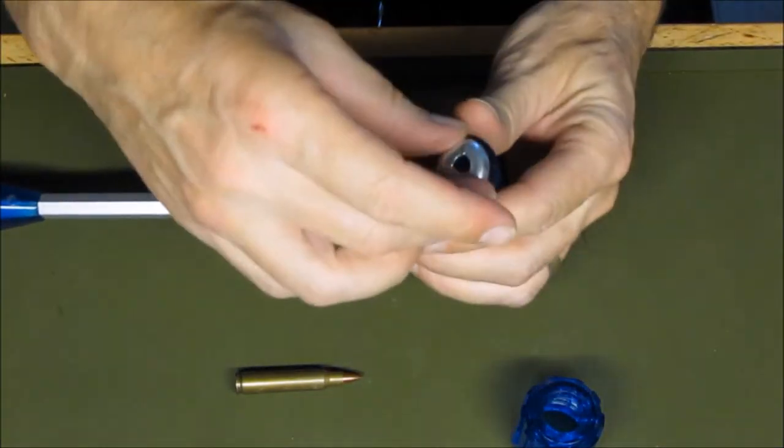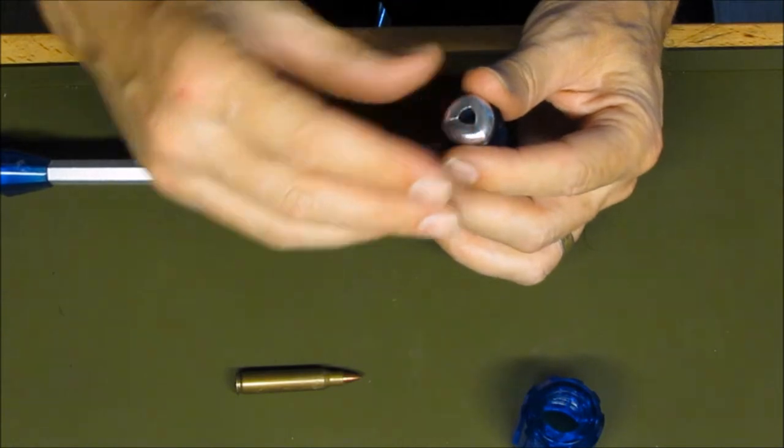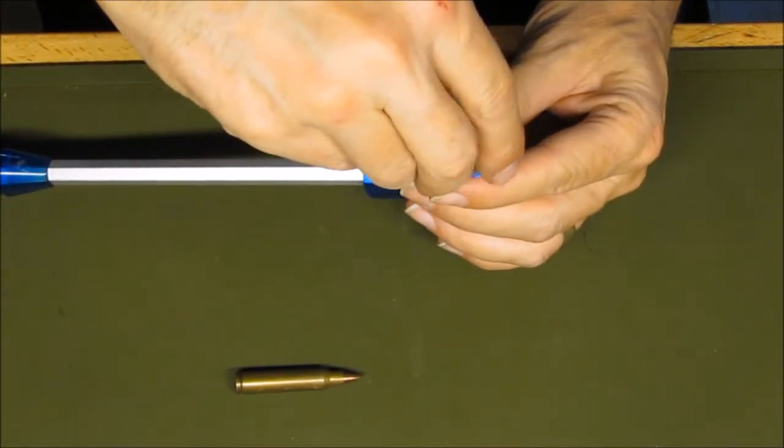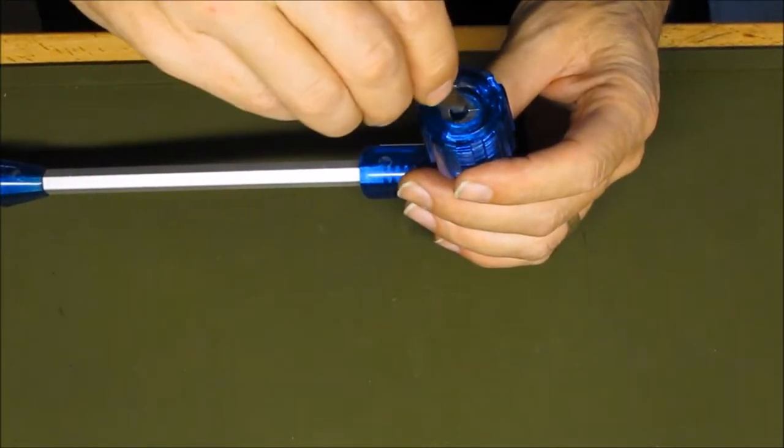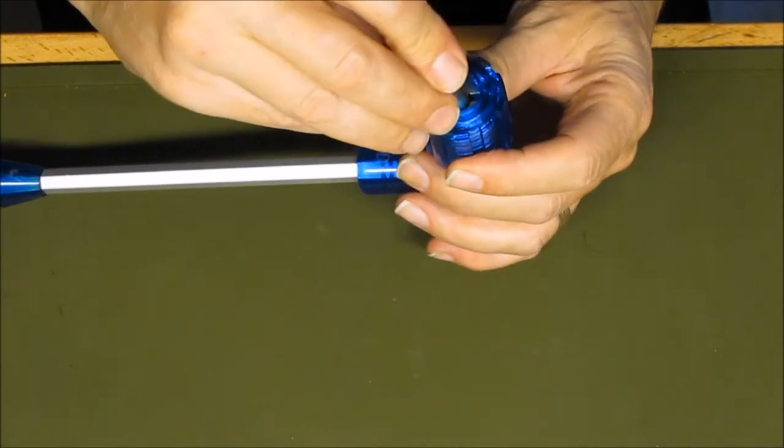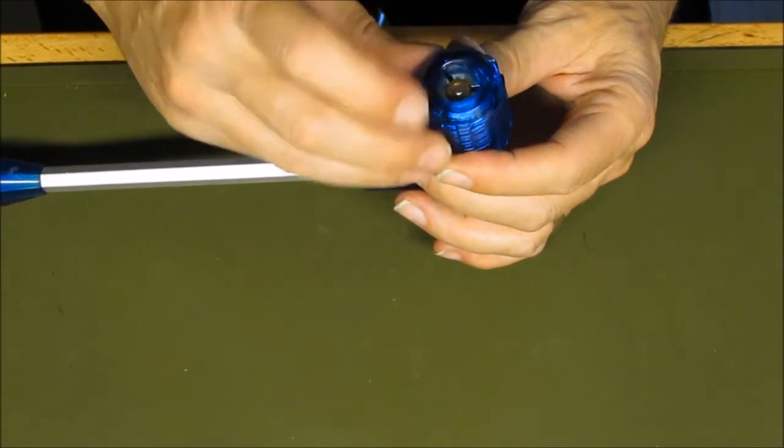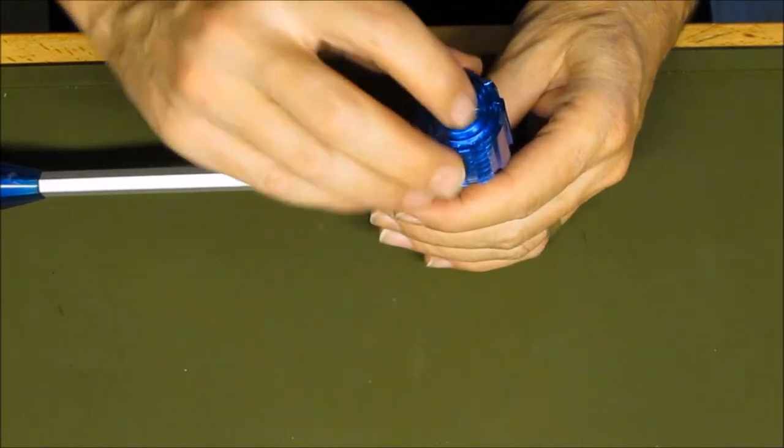So the top piece will go on like this. I usually just go ahead and begin screwing it down a little bit, and you're going to shove the bullet down in there and let that collet lock around the ring on the shell casing.